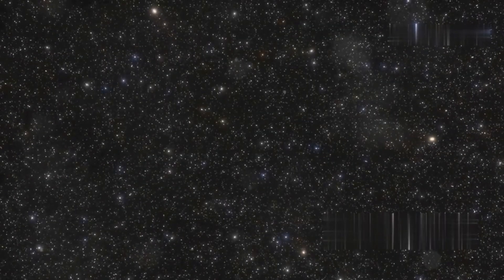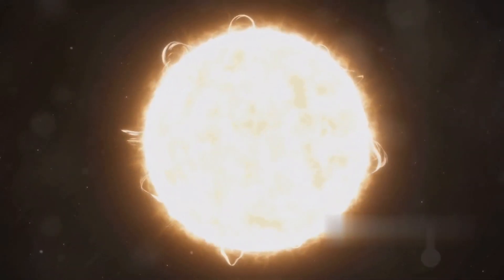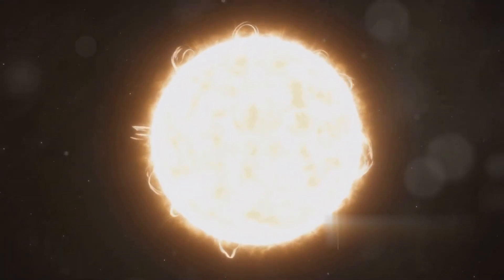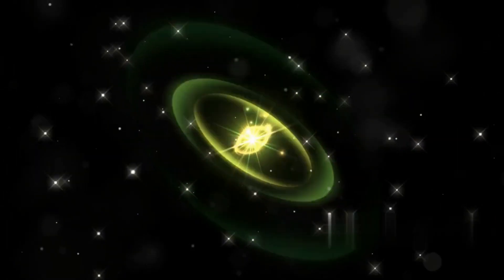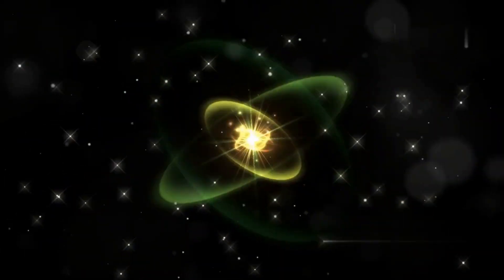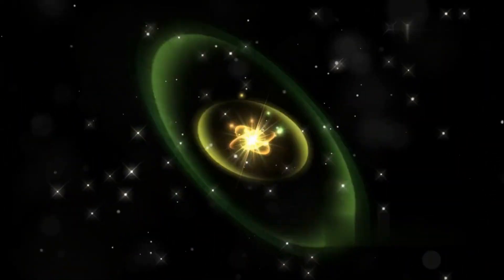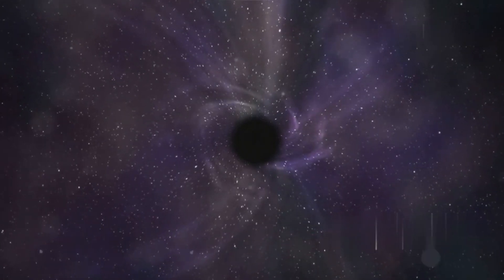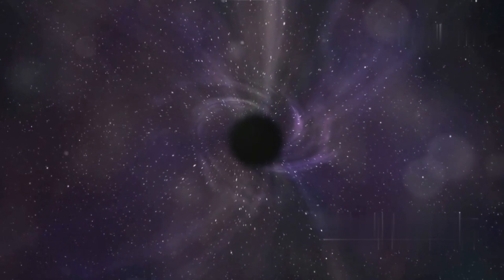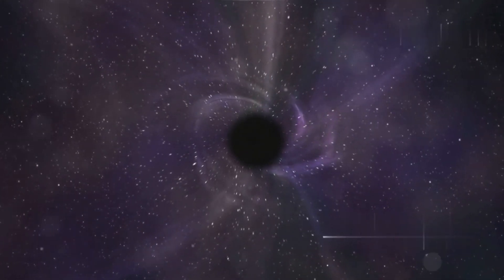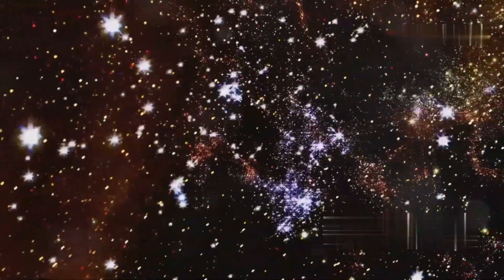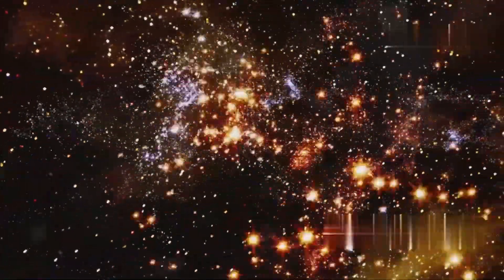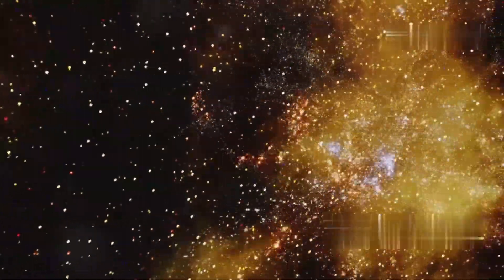We enter the degenerate era. This epoch is ruled by the remnants of dead stars. White dwarfs, incredibly dense embers of spent stars, dot the cosmos. Neutron stars, even denser and more exotic, spin rapidly, emitting pulses of radiation. And then there are the black holes, regions of spacetime where gravity is so strong that nothing, not even light, can escape. These stellar remnants, once mere byproducts of stellar death, now dominate the universe.